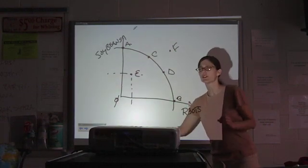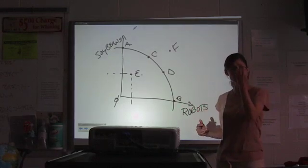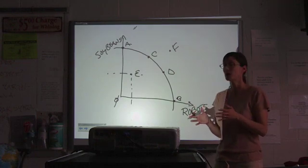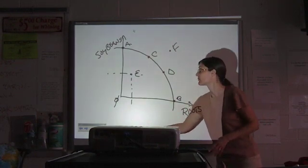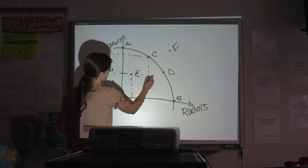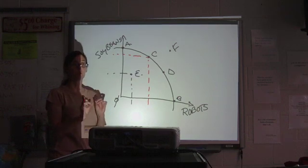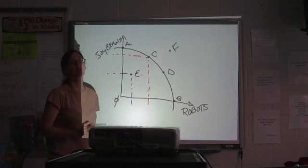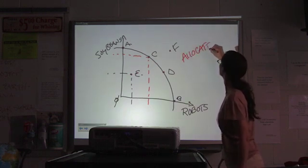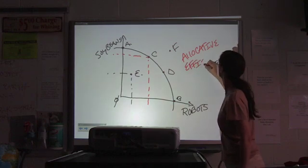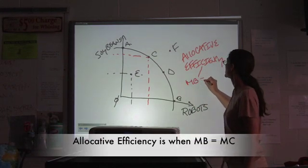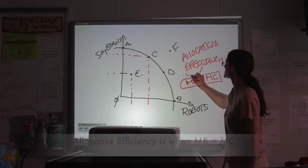Now, the other type of efficiency that we are worried about in any economy is allocative efficiency. To allocate means you're looking at how things are divided up. So, perhaps, the economy represented by this diagram is in a place where people prefer a lot of soybeans and fewer robots. If that is what people prefer, then point C represents allocative efficiency. So, allocative efficiency is going to be the point where your marginal benefit equals your marginal cost. And this is a very important principle.